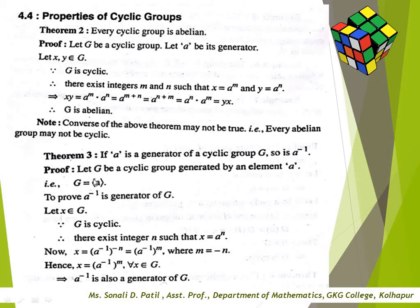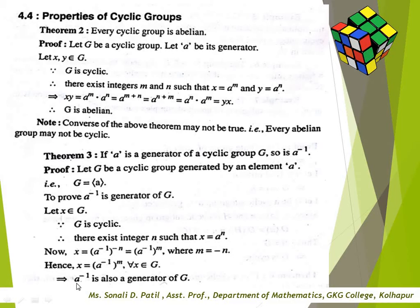Next theorem: if A is a generator of a cyclic group G, then A⁻¹ is also a generator. Proof: let G be a cyclic group generated by A, i.e., G = ⟨A⟩. Let X ∈ G; since G is cyclic, there exists integer n such that X = Aⁿ. Now X = (A⁻¹)⁻ⁿ = (A⁻¹)ᴹ where M = -n. Hence X = (A⁻¹)ᴹ for all X ∈ G, so A⁻¹ is also a generator of G.